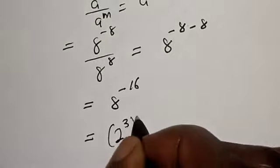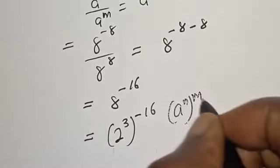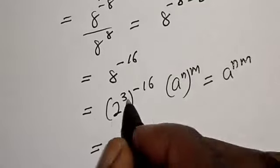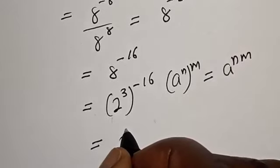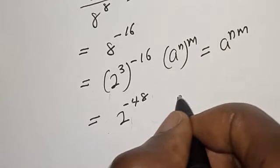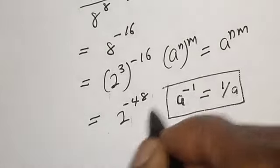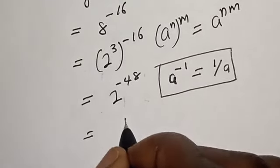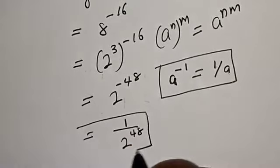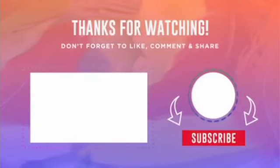Then this equals 2 raised to power 3, raised to power minus 16. Also, if you have a raised to power n raised to power m, this equals a raised to power n times m. So this becomes 2 raised to power 3 times 16, which is minus 48. And since a raised to power minus 1 equals 1 over a, this can be written as 1 over 2 raised to power 48, and this is our final answer. If you enjoyed the class, please don't forget to like, share, comment, and subscribe. Thank you.